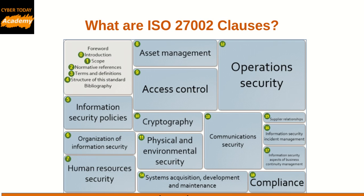The 14 main clauses are: 1. Information security policies, 2. Organization of information security, 3. Human resource security, 4. Asset management, 5. Access control, 6. Cryptography, 7. Physical and environmental security, 8. Operations security — covering procedures and responsibilities, protection from malware, backup, logging and monitoring, control of operational software, technical vulnerability management, and information systems audit coordination.